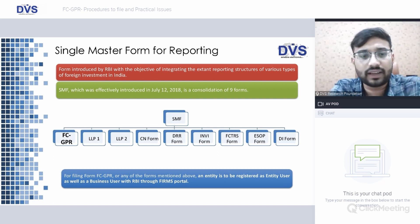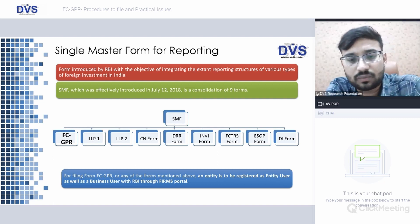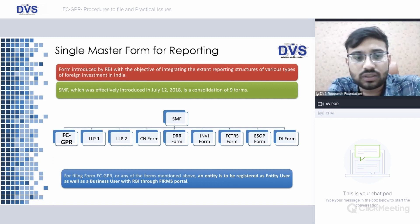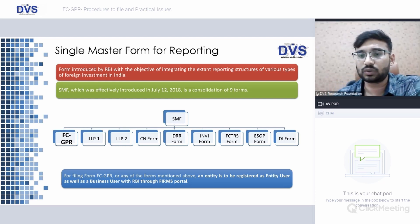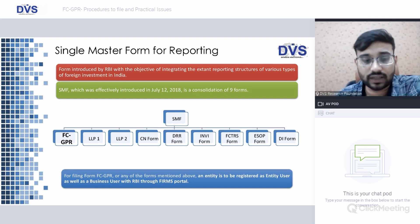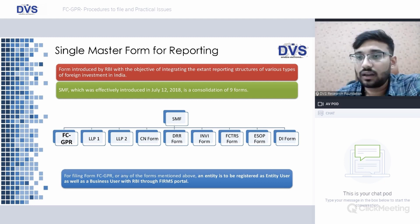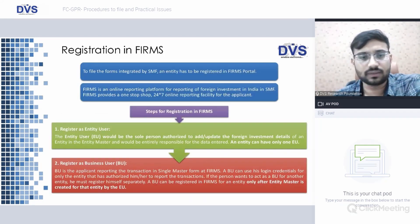For filing FC-GPR, an entity has to register itself as an Entity User as well as a Business User in the FIRMS portal. Let us see what these registrations involve.